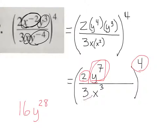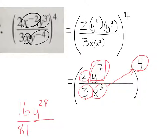Now I need to take the 3 and raise it to the fourth power. That's 3 times 3, which is 9, times 3, which is 27, times 3 again, which is 81. So on bottom I have 81. And then x cubed being raised to the fourth power — I have a power to a power, so I multiply, and it's going to be x to the twelfth power.